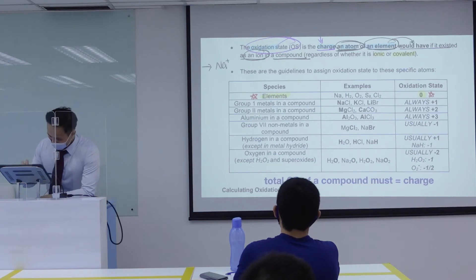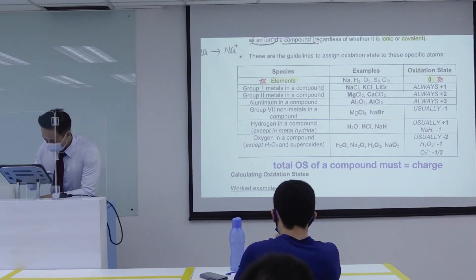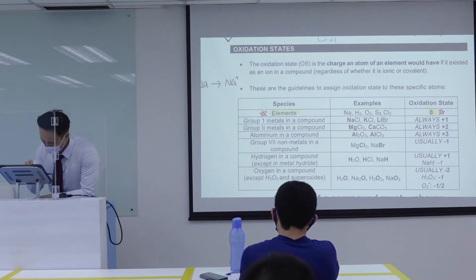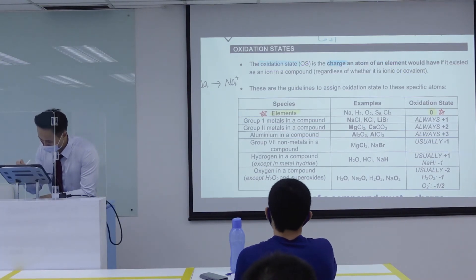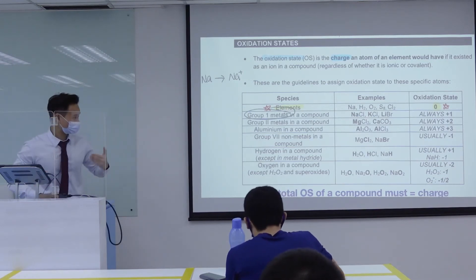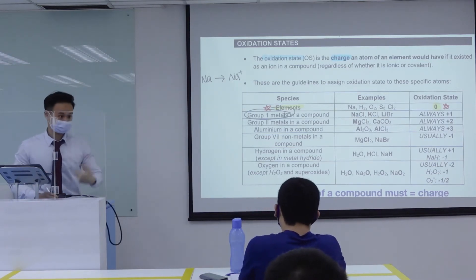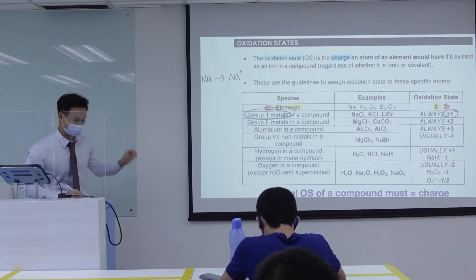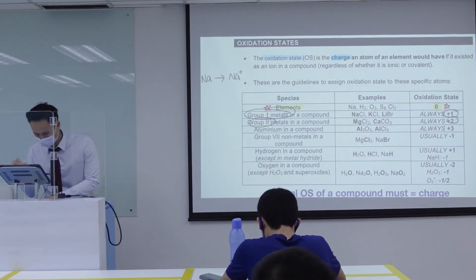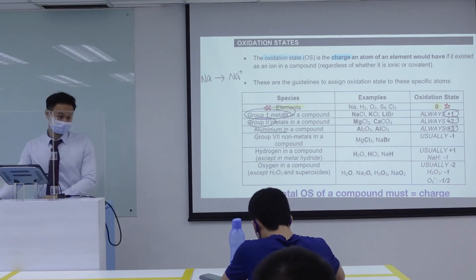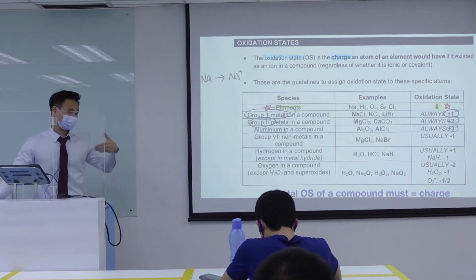Here's the thing. Remember, read this again. Oxidation state is basically your charge. It is kind of like a charge. So if you're a group one metal, group one metals will form what charge? Lingui? Plus one. Do you see it? Group one metals are always plus one. Group two metals always plus two. Aluminum, if it's in a compound, it's always plus three because aluminum is in group three. Makes sense.